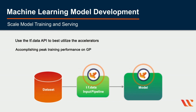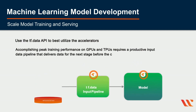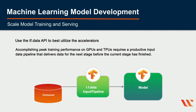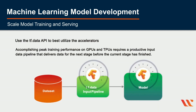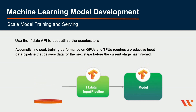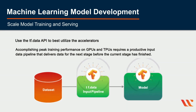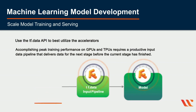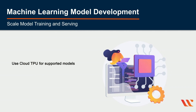Achieving peak training performance on GPUs and TPUs requires an efficient input pipeline that delivers data for the next step before the current step has finished. The tf.data API provides functions like map, batch, cache, prefetch, shuffle, repeat, and interleave to build flexible and efficient input pipelines. Using larger batch sizes will also improve accelerator utilization.